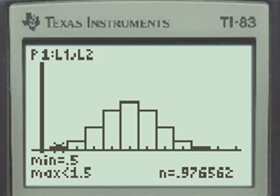If we then use the right arrow to go to the class which has a minimum of 1.5, maximum of 2.5, so this would be 2, the probability of getting 2 right is approximately 4.4%.